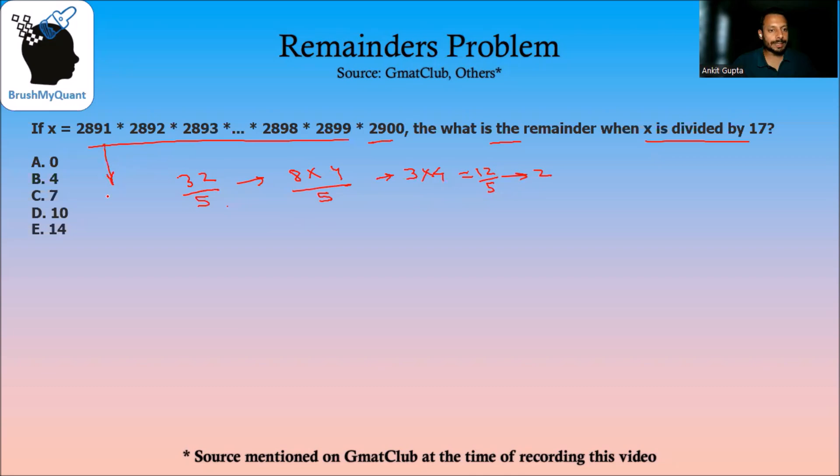If we divide 2891 by 17, we will actually get a remainder of 1. That means 2892 will give a remainder of 2 by 17. 2893 will give a remainder of 3 and so on. We can say that remainder of this entire expression by 17 is same as remainder of 1 into 2 all the way up to 10 by 17.